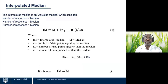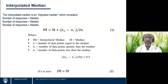The interpolated median is simply an adjusted median. We take the customary median and adjust it by the amount (n_plus minus n_minus) divided by (2n), where n_plus is the number of responses greater than the median, n_minus is the number of responses smaller than the median, and n is the number of responses equal to the median. The absolute value of this adjustment is less than 0.5, meaning if the median is four and we adjust upward, the maximum we reach is 4.5; adjusted downward, the minimum is 3.5. If n is zero — no responses equal to the median — the interpolated median simply equals the regular median.